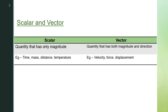You already know the difference between scalar and vector quantities. A scalar quantity has only a magnitude, while a vector quantity has both magnitude and direction. For example, time and temperature have only a value — time is one second, two seconds, etc. — and no direction. But if you consider velocity or force, it will have a direction to completely specify the quantity.